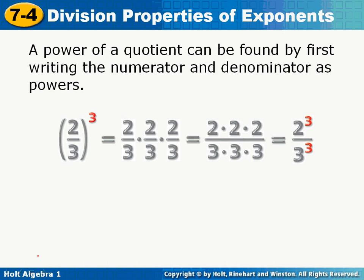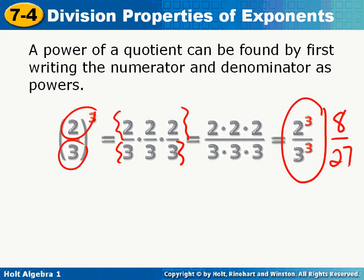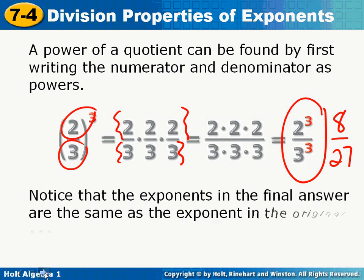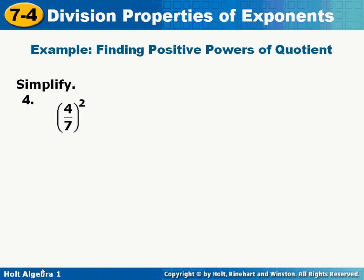Okay, now we're going to do quotients with fractions. That's dividing with fractions. When you have 2 thirds to the 3rd, that means 2 to the 3rd, which is this set of 2's, and 3 to the 3rd, which is this set of 3's. Basically, that just means you're doing 2 to the 3rd over 3 to the 3rd, which would be 8 over 27. Notice that the exponents in the end are the same as the exponents in the beginning. Number 4, that's going to be 4 squared over 7 squared, which is 16 over 49.